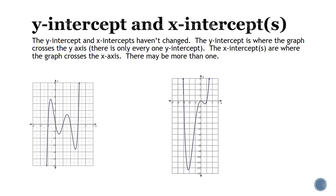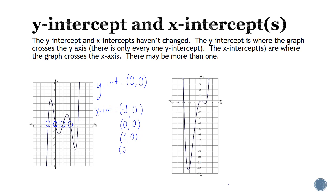For this first graph, the y-intercept is always a point where the x part of the point is zero. It crosses the y-axis at zero, so the y-intercept is (0, 0). Then we identify the x-intercepts — there are more than one. The point (0, 0) is still an x-intercept because it's crossing the x-axis as well. The first one crosses at negative one, so that x-intercept is (−1, 0). Then we have (0, 0) again, then (1, 0) and (2, 0).